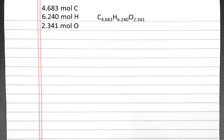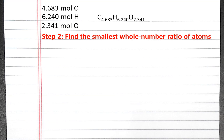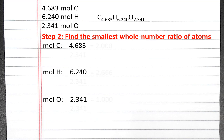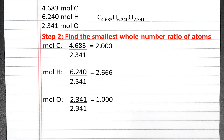Now that I have my units of moles of each element, I can find the smallest whole number ratio of atoms in the compound. To find my smallest whole number ratio of atoms, my first step will be to divide all of the numbers by the smallest number of moles. Oxygen has the smallest number of moles at 2.341, so I'll divide all three of the moles by 2.341.